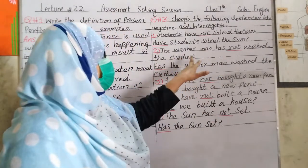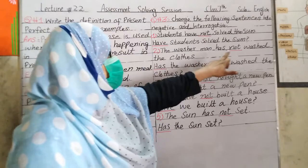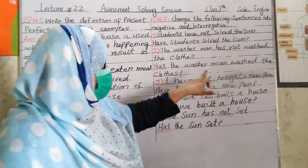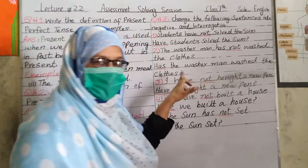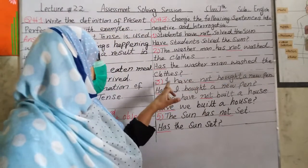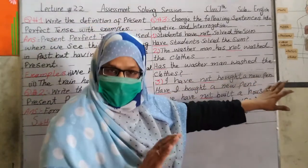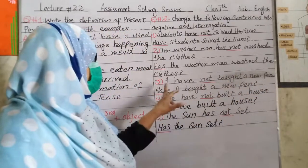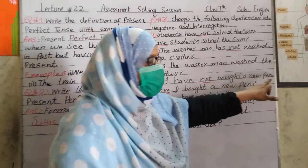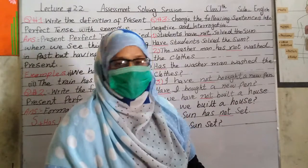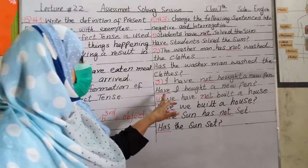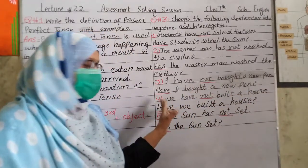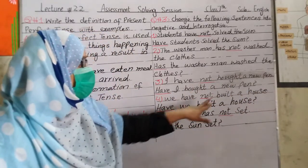Second sentence: 'The washerman has washed the cloth.' Negative: 'The washerman has not washed the cloth.' Interrogative: 'Has the washerman washed the cloth?' Third sentence: 'I have bought a new pen.' Negative: 'I have not bought a new pen' — میں نے نہیں خریدا۔ Interrogative: 'Have I bought a new pen?'